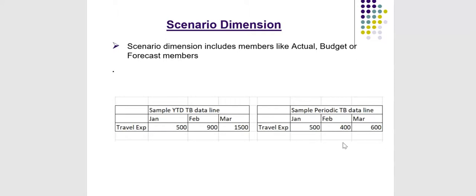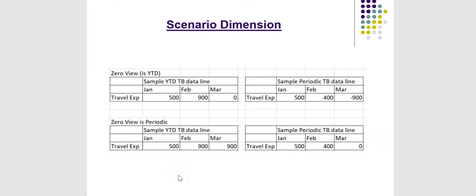If we load a periodic trial balance, the system calculates YTD values for that particular account. Now let us understand what Zero View means. Zero View can be either periodic or YTD. In the first example, Zero View is YTD. In this case, March has a value of 0, meaning the YTD of this travel expense is 0. As of February there is a YTD value of 900, and as of March it becomes 0, meaning there must be a reversal or adjustment made in the month of March.